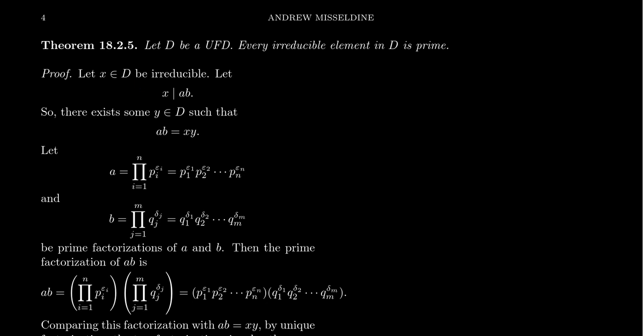So now remember what does it mean to be a prime? To be a prime means you satisfy Euclid's lemma. If your number divides a product, then it must divide one of the factors. That's what we want to argue right now.